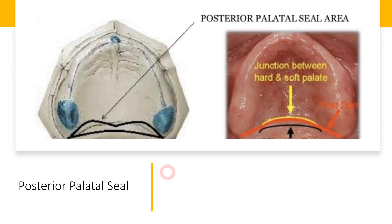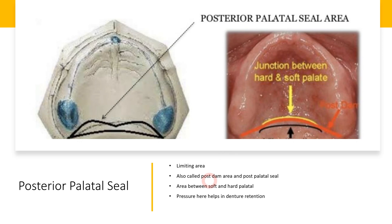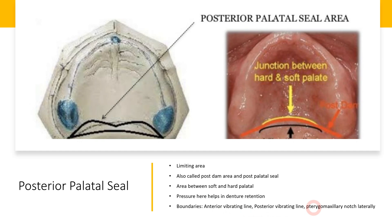Just posterior to or close to the soft palate, we have a structure called the posterior palatal seal. Anteriorly to this we have the anterior vibrating line, and posteriorly we have the posterior vibrating line. It is also called the post-dam area and post-palatal seal. It's an area present between the soft and hard palate, and when pressure is exerted over here, good retention of the denture can be accomplished. Recording the posterior palatal area is of utmost importance for denture retention. Its boundaries include the anterior vibrating line, posterior vibrating line, and pterygomaxillary notch laterally.